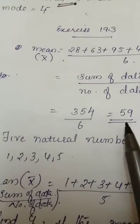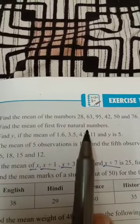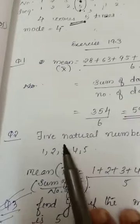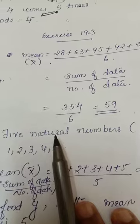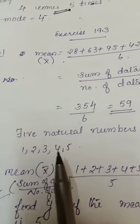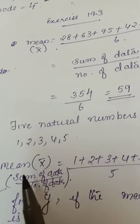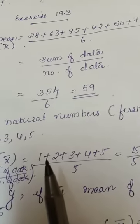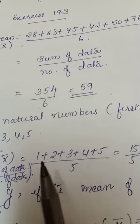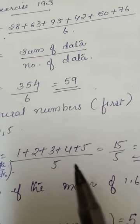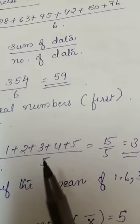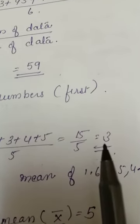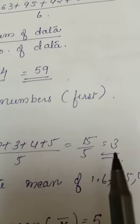Next question number 2. Find the mean of first five natural numbers. First five natural numbers, which are the first five natural numbers? Starting from 1: 1, 2, 3, 4, 5, natural numbers. Mean, x bar, what is the formula? Sum of data divided by number of data. Now sum of data you add it, 1 to 5 you will get 15, divided by 5 numbers, then you have to get 3 as answer. Clear.